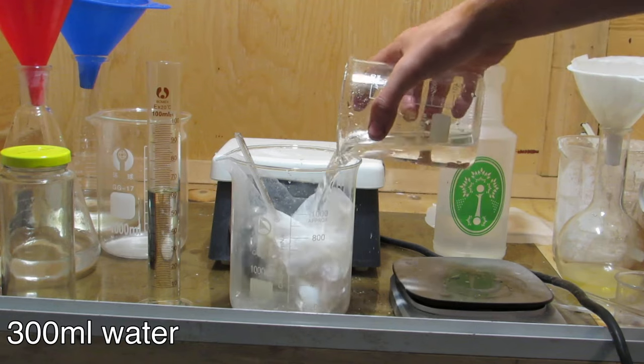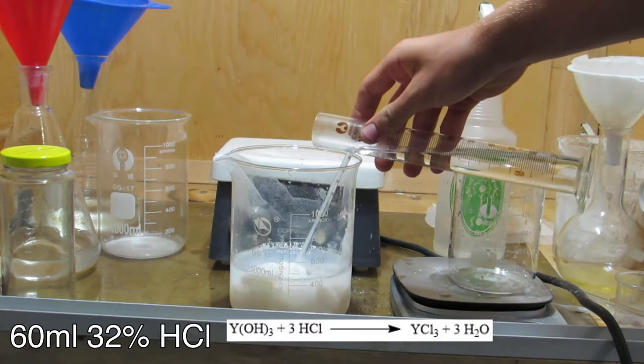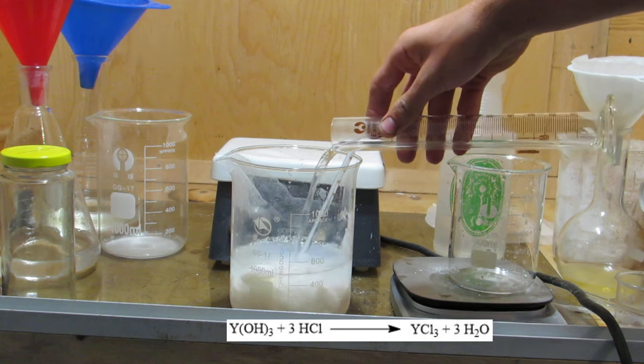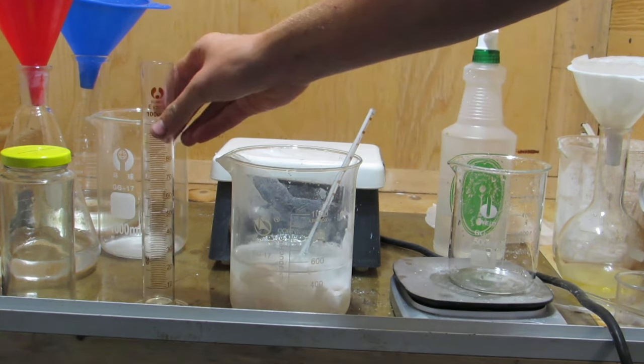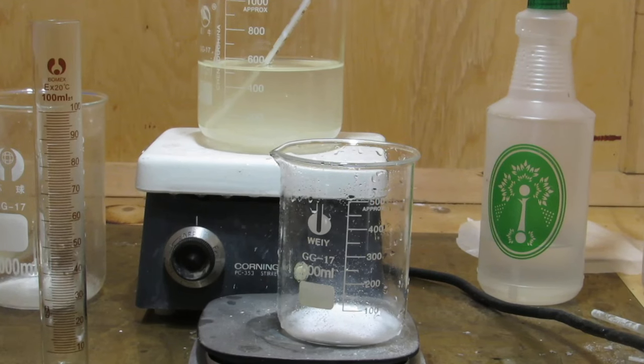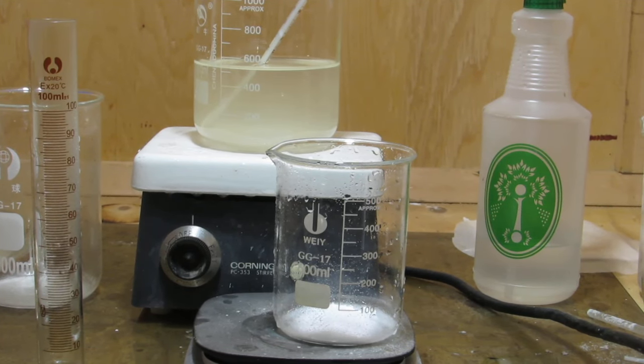300 milliliters of water was added, followed by 60 milliliters of concentrated hydrochloric acid. This causes soluble yttrium chloride to form. The hydrochloric acid can be purchased at hardware stores as muriatic acid. After stirring, the yttrium fully dissolved into solution.